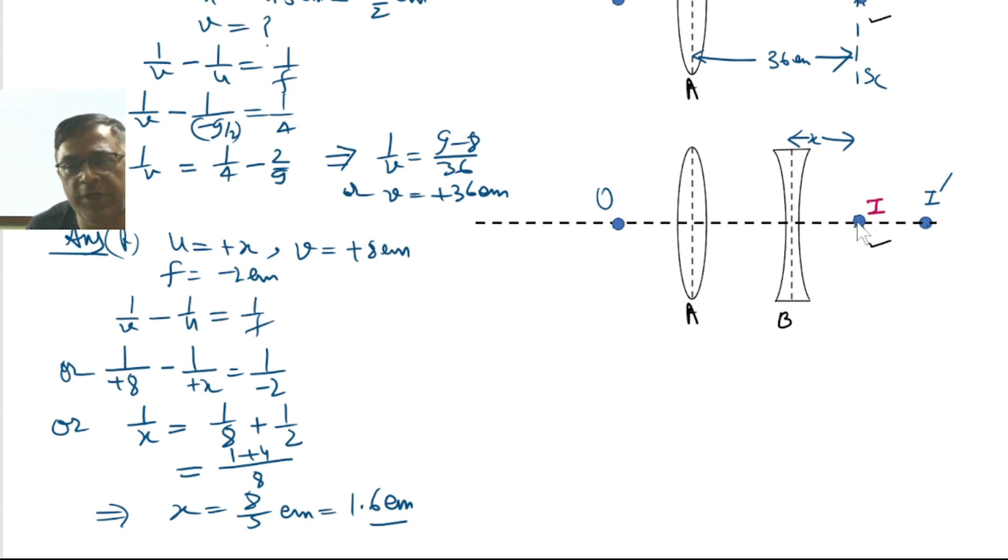So the distance of the object for the diverging lens happens to be 1.6 centimeters. Now we already know the distance of this I from the convex lens equals 36 centimeters.